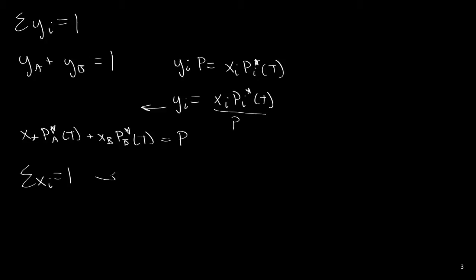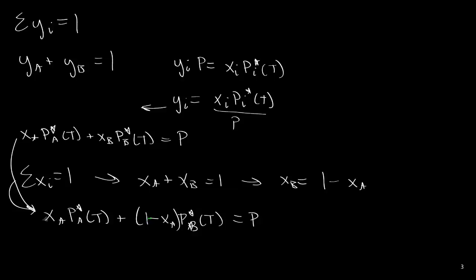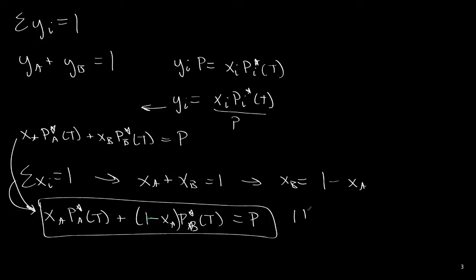If we take the consistency relationship xa + xb = 1, we can rearrange to xb = 1 − xa and substitute into our expression, giving: xa·Pa*(T) + (1 − xa)·Pb*(T) = P. In this equation we have one equation and one unknown, which is xa, so we can solve for it directly.